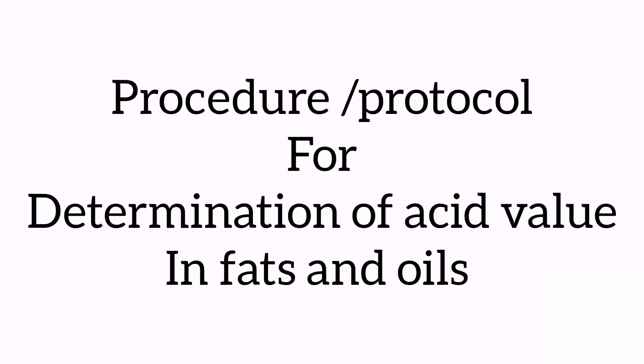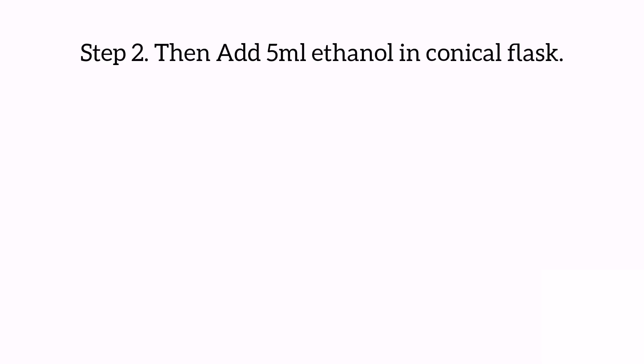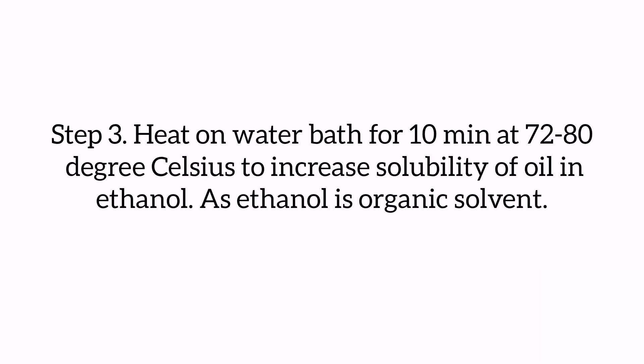Procedure for determination of acid value in your oil sample, step by step. Step one: take one gram of oil sample in a conical flask. Step two: add five milliliters of ethanol in the conical flask. Step three: heat on a water bath for 10 minutes at 72 to 80 degrees Celsius to increase the solubility of oil in ethanol, as ethanol is an organic solvent.